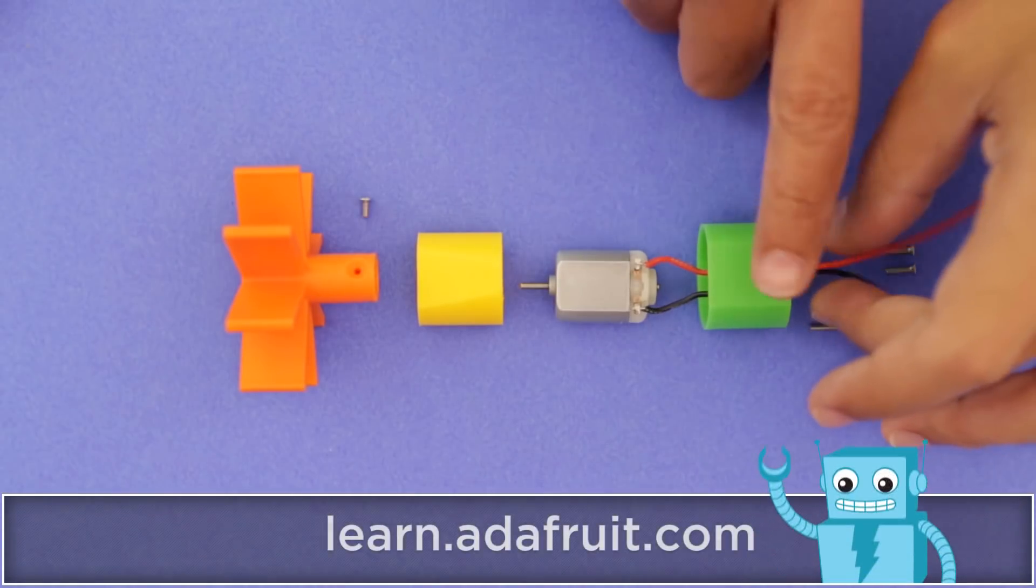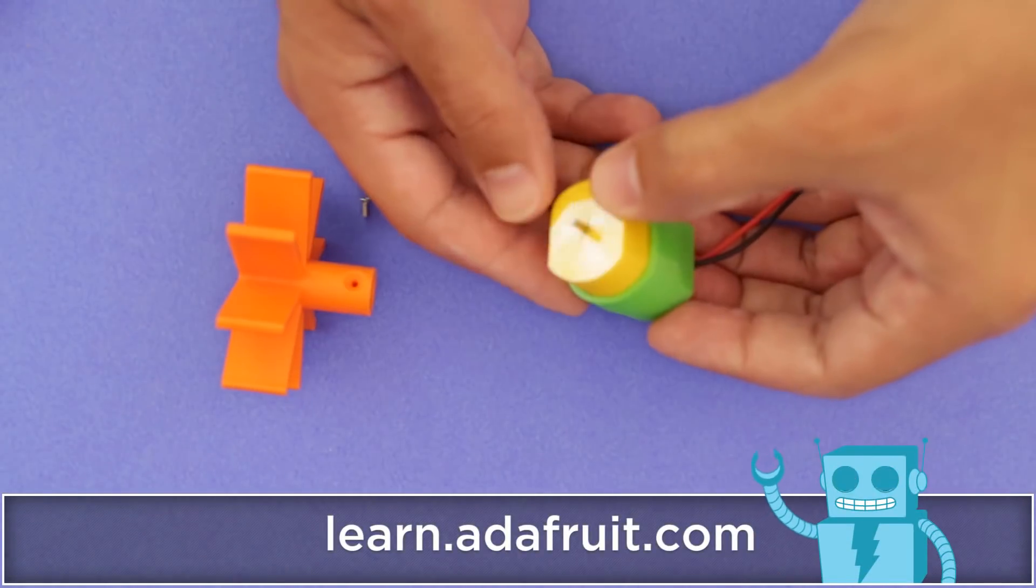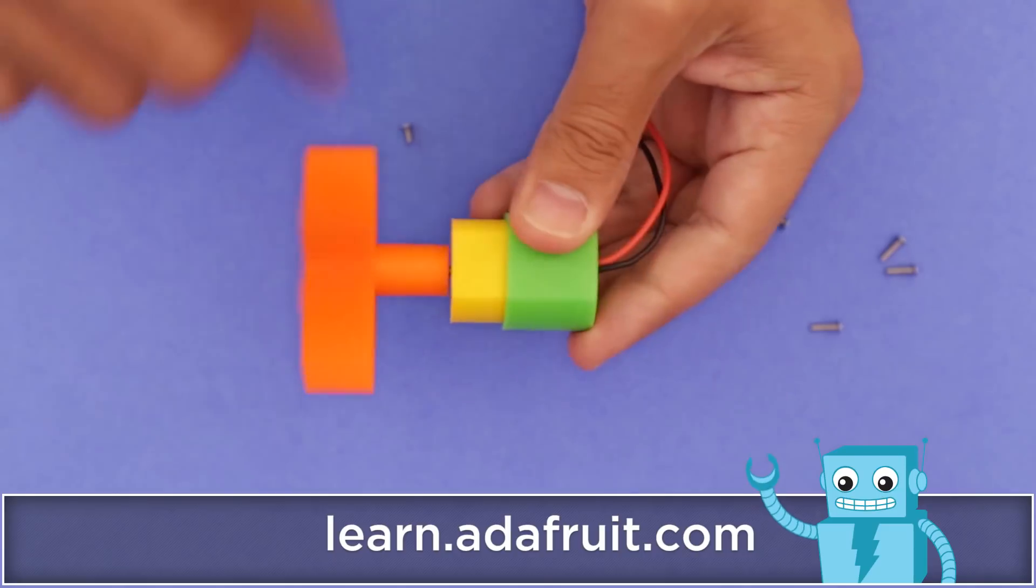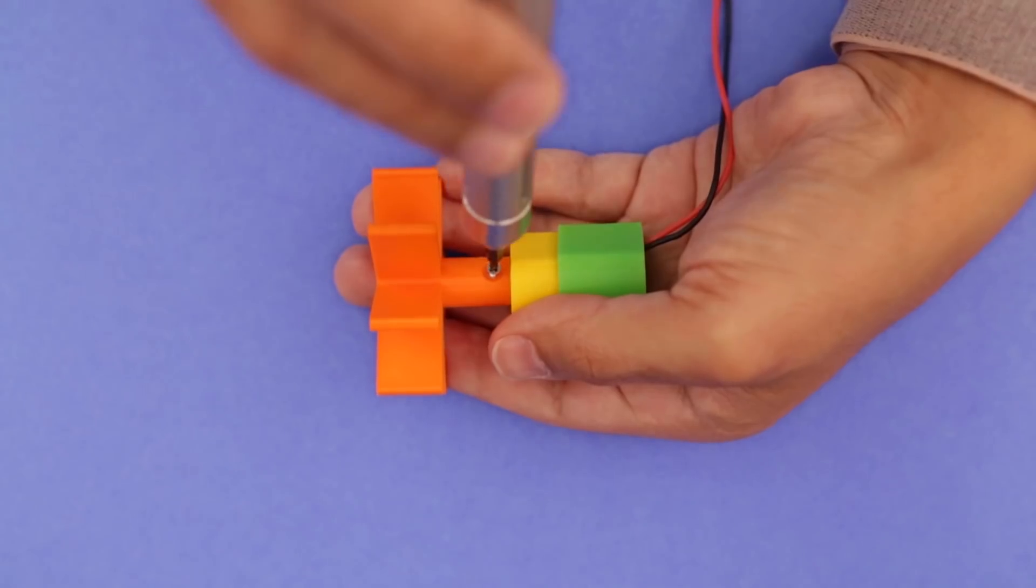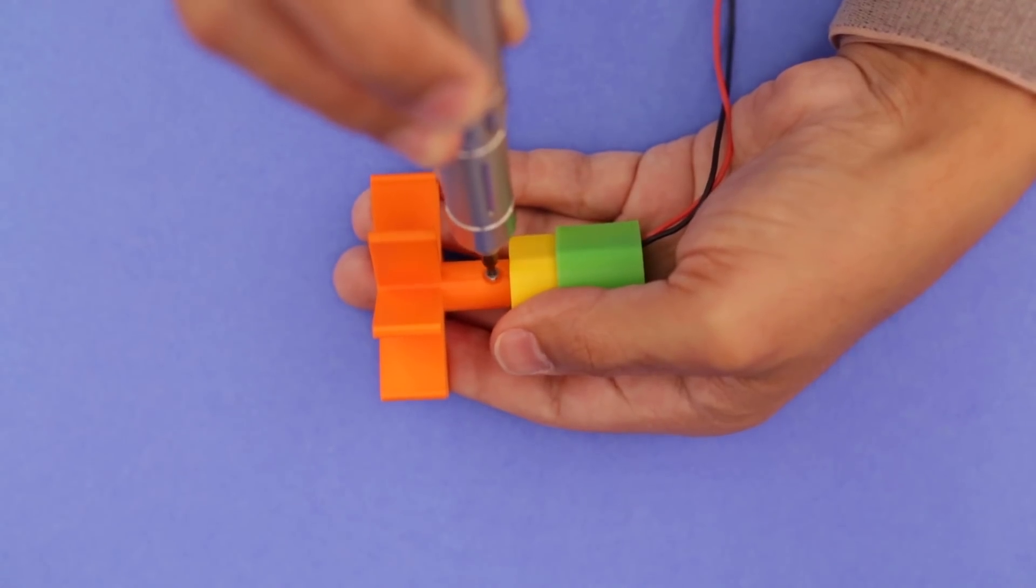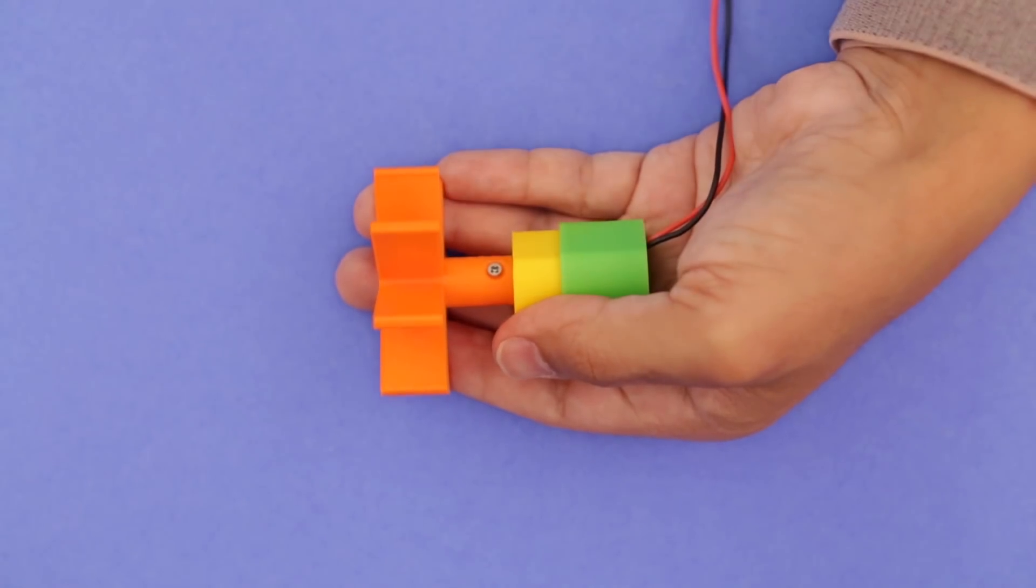Check out the full tutorial for this project by heading over to the Adafruit learning system. We use the set screw to secure the 3D printed paddle wheel to the shaft of the motor. This will prevent it from wobbling and slipping out.